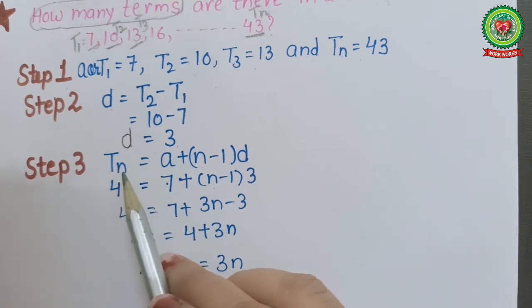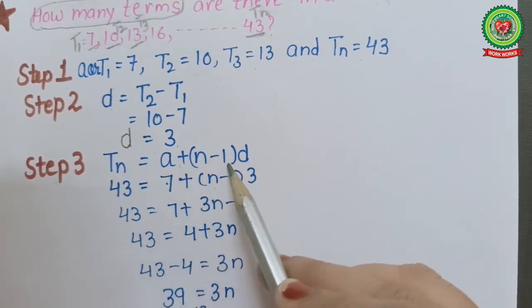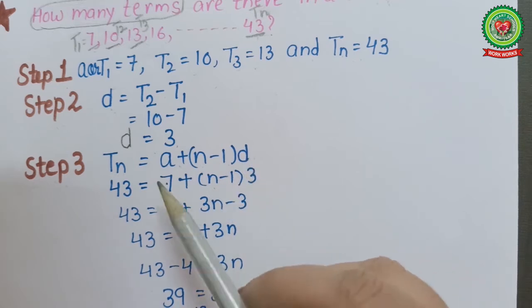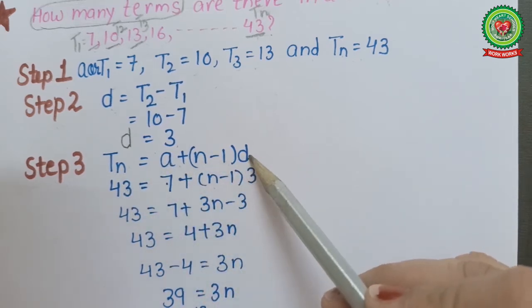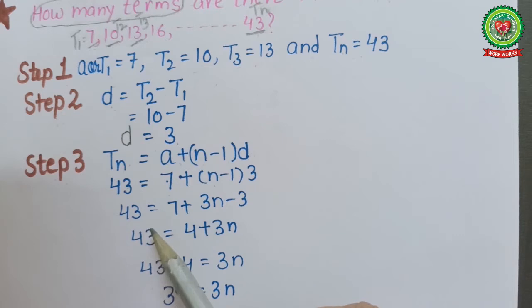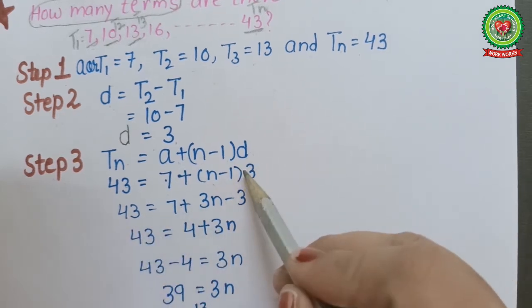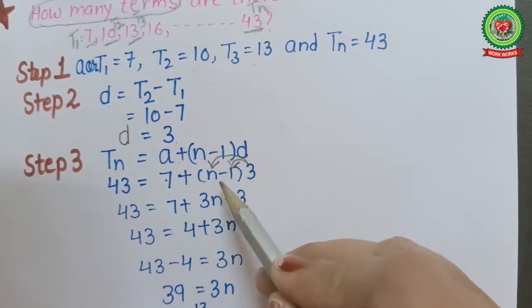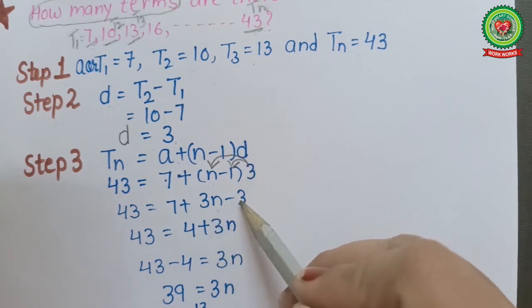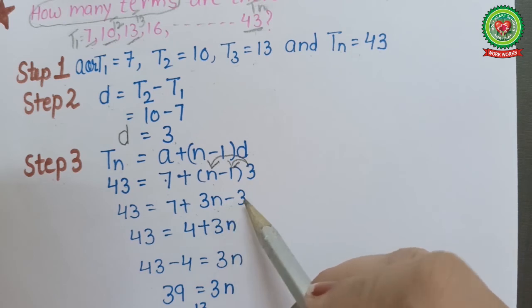Now step 3: the general term of an AP is tn = a + (n-1)d. We will put the value of tn, value of a, and value of d. Now we will apply the arrow method to multiply 3 with n and 3 with 1. Then we get 43 = 7 + 3n - 3.